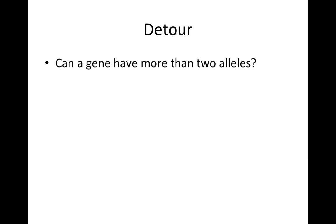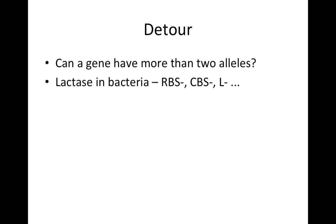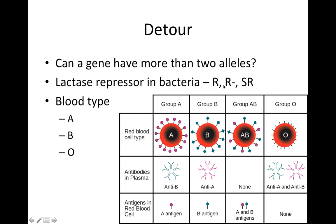So it's worth pointing out that genes can have more than two alleles. We already know that, we just maybe haven't emphasized it. So remember, like in lactase in bacteria, within the lactase gene, we had RBS-, CVS-, and L-. Within the lactase repressor in bacteria, we had R, R-, or the super repressor. So a single gene can have more than two alleles, even if we haven't been emphasizing it.